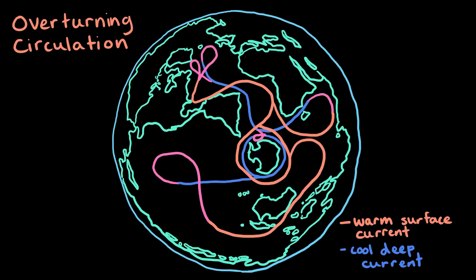Now, if you follow the currents in the overturning circulation, you can see that they flow all over the world's oceans, from the southern ocean around the South Pole to the Pacific, the Indian, and all the way into the North Atlantic.